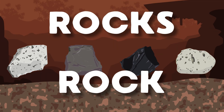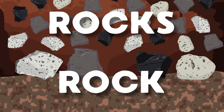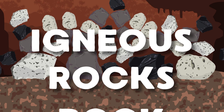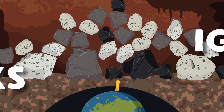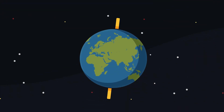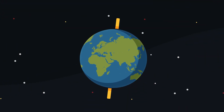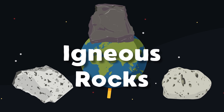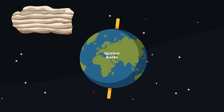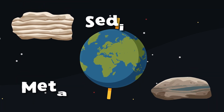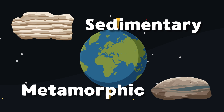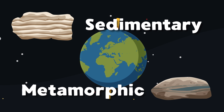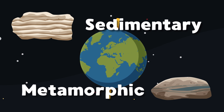Rocks, rock — let's talk about igneous rock. They make up a significant portion of the earth's crust. Igneous rocks are one of the three main types of rocks on earth. The other two are sedimentary and metamorphic.